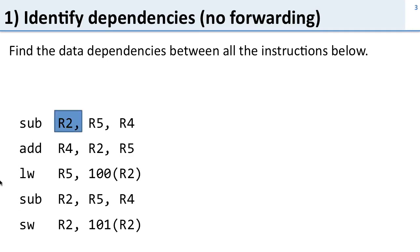Starting here, we can see the subtraction instruction is going to write to R2. What instructions are dependent on this write? The add instruction uses R2 as an input, and the load word instruction uses R2, so these two instructions are both dependent on the subtraction instruction.